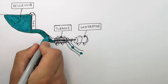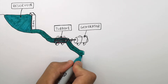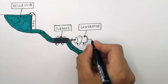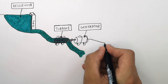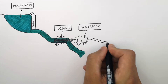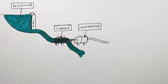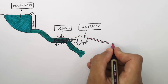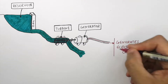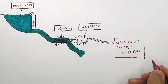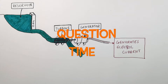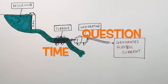The fast-moving water drives the turbine, which causes the generator to turn. The generator will then generate an electrical current. It's question time — attempt these questions to check your understanding.